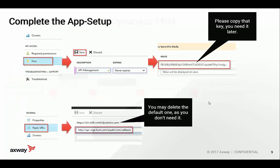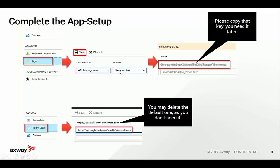The last two things you need for the OAuth protocol are a client ID and a secret. The client ID is already generated when you created the application, but in addition you need to generate the secret, which Microsoft calls a key. To create a new key, enter a description, choose whether the key should ever expire, then hit save. The key — or secret — will then appear, and you must copy it immediately because it will disappear and never be shown again.